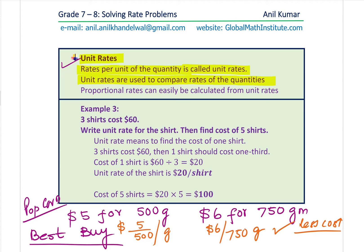For dollar 5, you get 500 grams. Dollar 6 would give you 600 grams at the same rate. But here we are getting 750 grams for dollar 6 — more value for the same money. So that is a better buy.